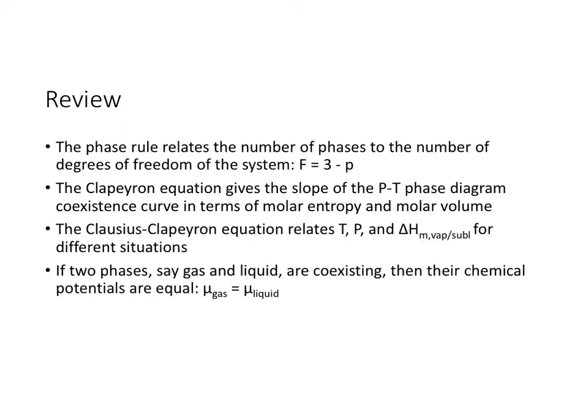And these were the topics we saw last time. We saw the phase rule, which tells us for the number of degrees of freedom that we have in a pressure-temperature phase diagram, it's F = 3 - p. We also saw the Clapeyron equation, which tells us the slope of the coexistence curves within the pressure-temperature phase diagram.